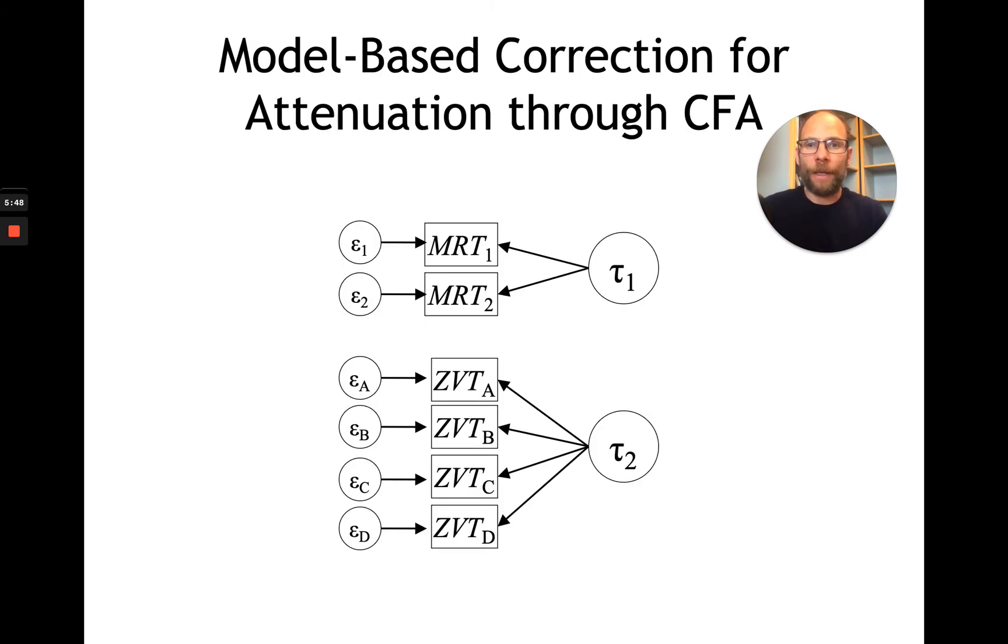But rather, what we can do is we can apply confirmatory factor analysis and then we obtain a model-based correction for attenuation through CFA. In confirmatory factor analysis, we have the measurement model combined with a structural model for the latent true score variables here. And so we can specify true score models for multiple constructs or multiple variables simultaneously with multiple indicators. And then these true score variables contain the true score variance. So they are already corrected for measurement error.